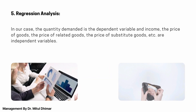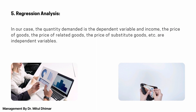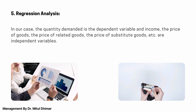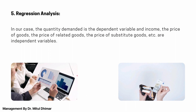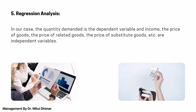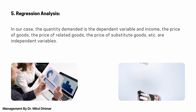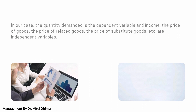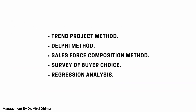In our case, the quantity demanded is the dependent variable, and income, the price of goods, the price of related goods, the price of substitute goods, etc. are independent variables. So friends, these are the total demand forecasting methods covered in this video.